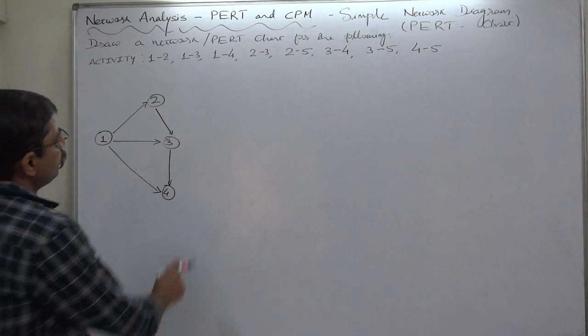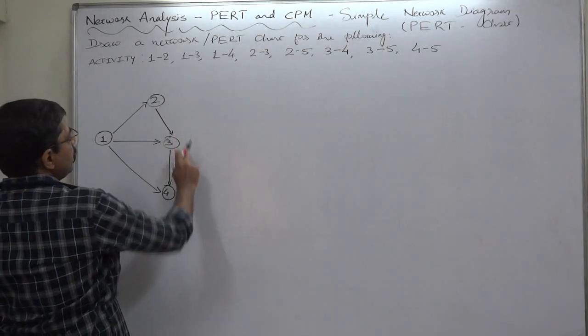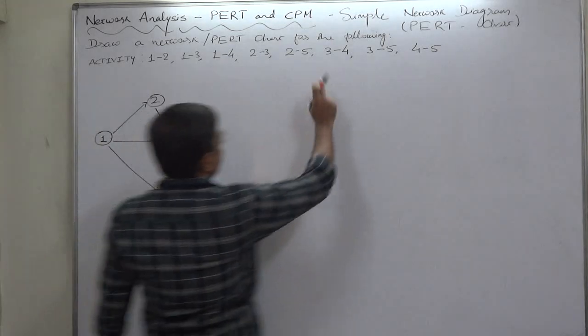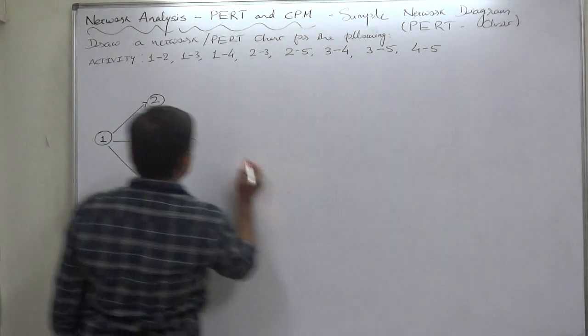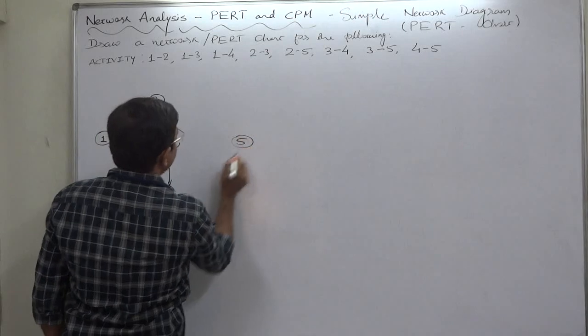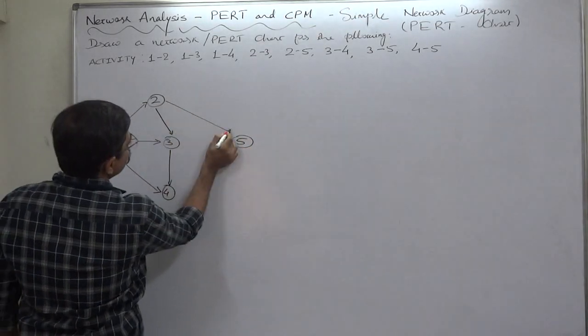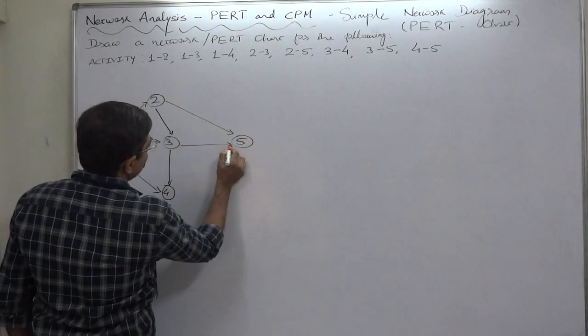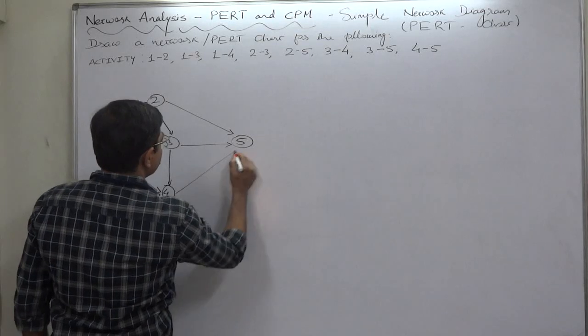Now from 2, 3, and 4, the last event is 5. So say if 5 is here, this is 2 to 5, this is 3 to 5, and this is 4 to 5.